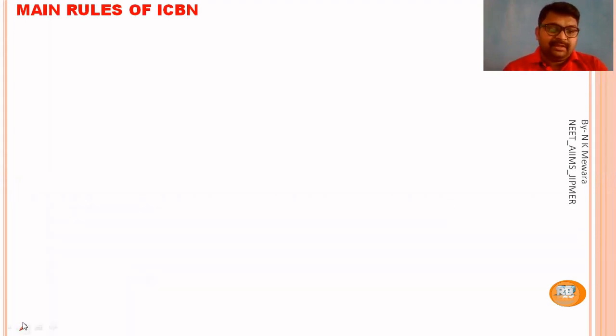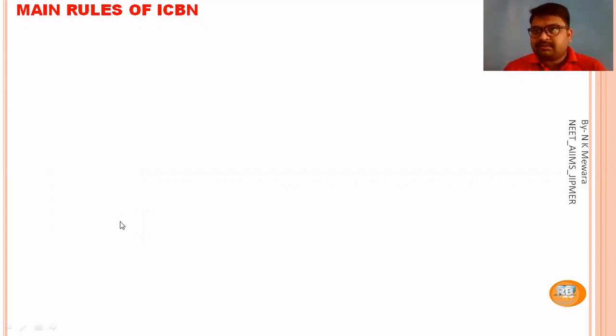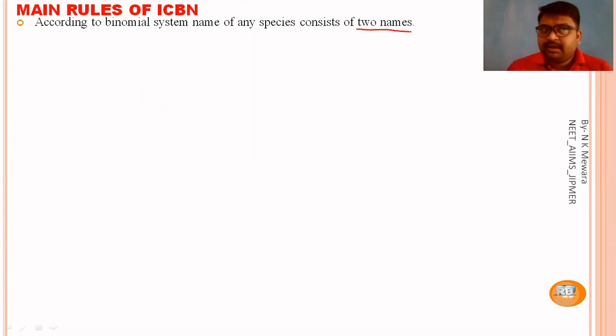The main rule for ICBN — International Code of Botanical Nomenclature — deals with how to write scientific names of plants. According to the binomial system, the name of any species consists of two names. We already know that in the binomial system there are two names: the generic name indicating the genus, and the specific name indicating the species.